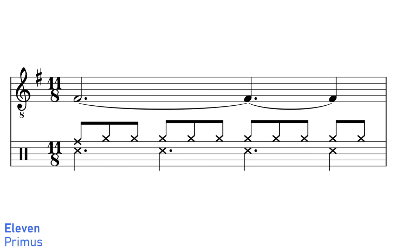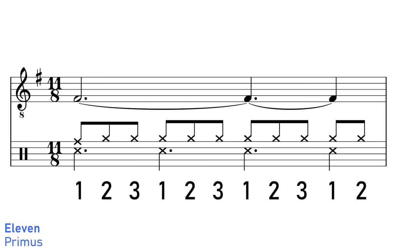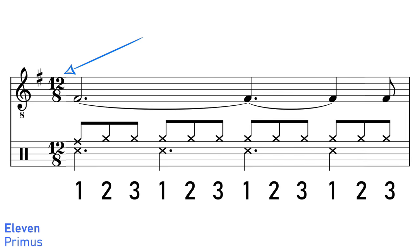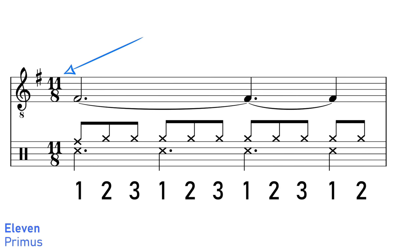11 by Primus is in 11/8 time. Here the 11 beats of the bar are grouped in three groups of 3 and one group of 2. This gives the music a 12/8 shuffle sound, but with the last beat of the bar missing, so like a wonky shuffle sound.